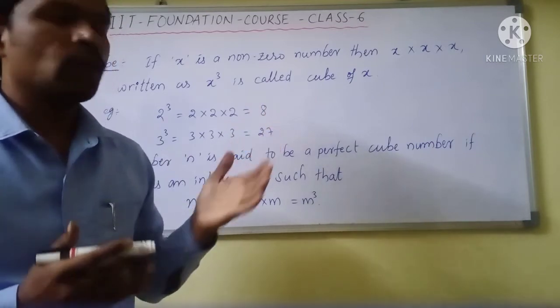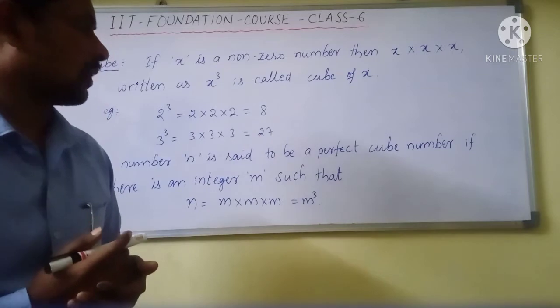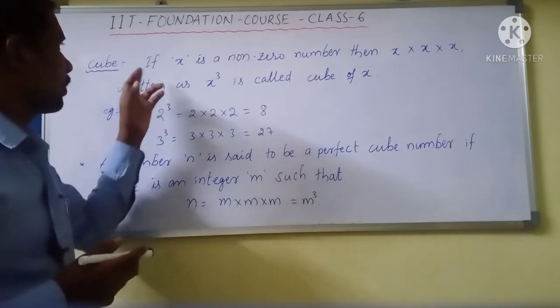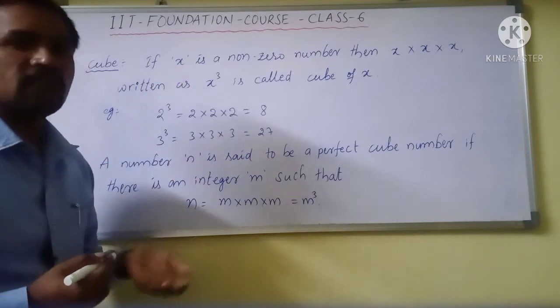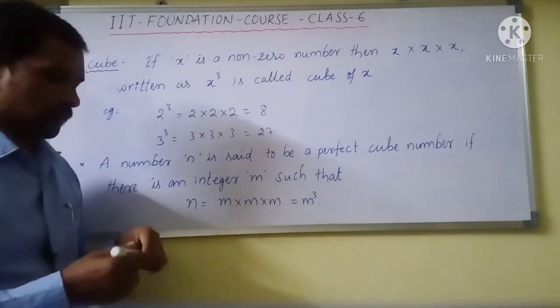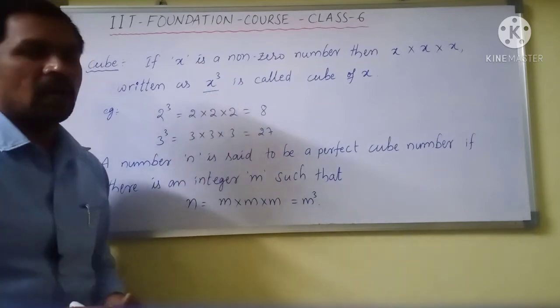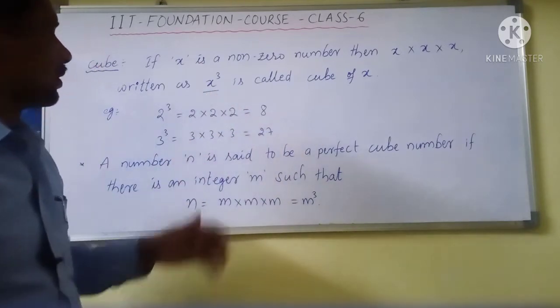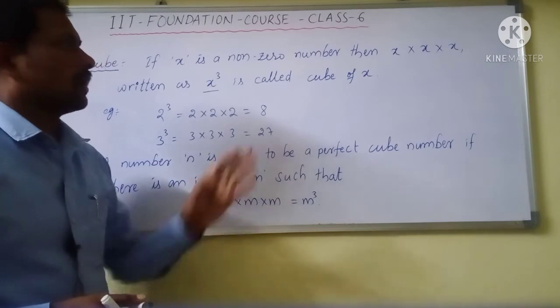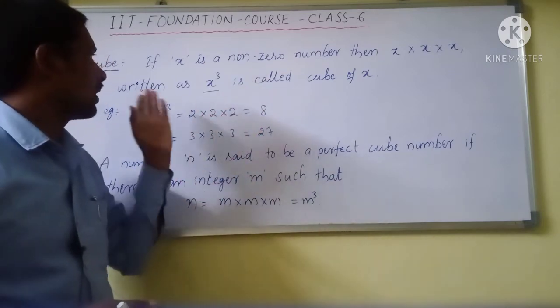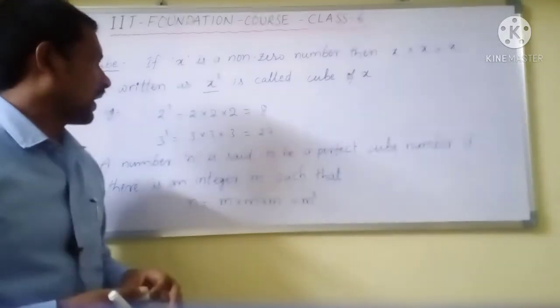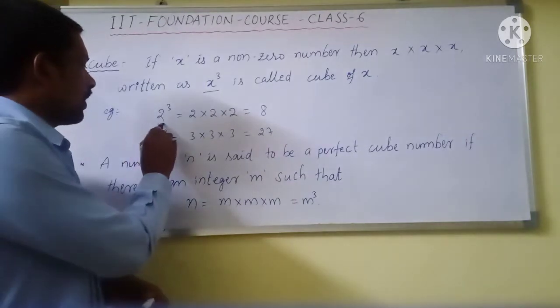We are going to discuss in today's session. So let me explain what is the cube. If x is a non-zero number, then x into x into x, written as x power 3, is called cube of x. Once again I am repeating: if x is a non-zero number, then x into x into x, written as x power 3, is called cube of x.